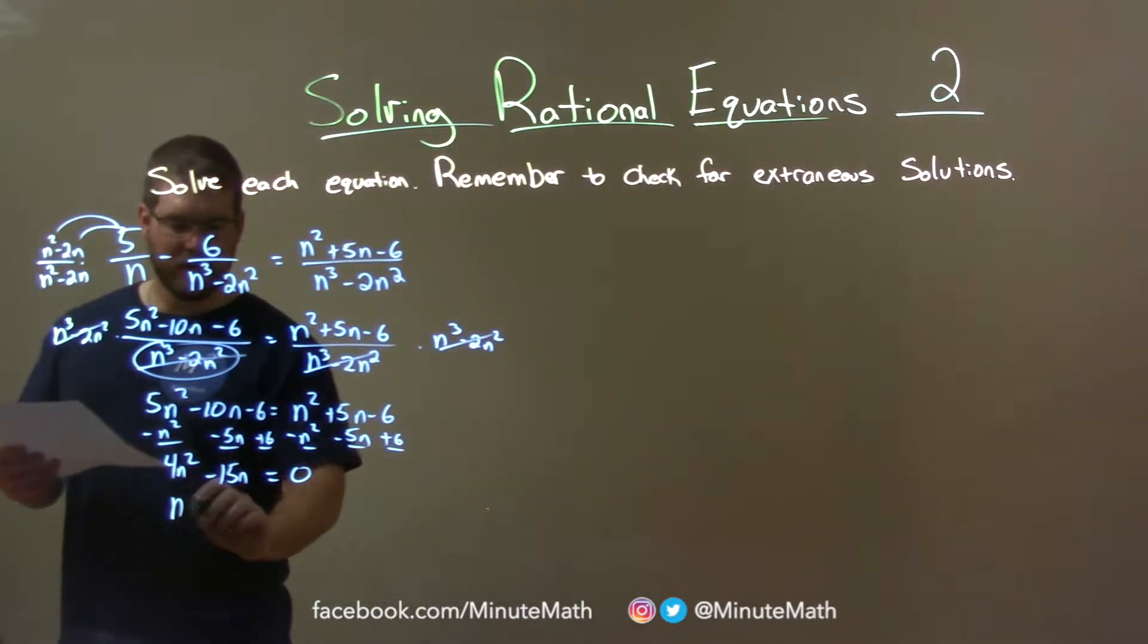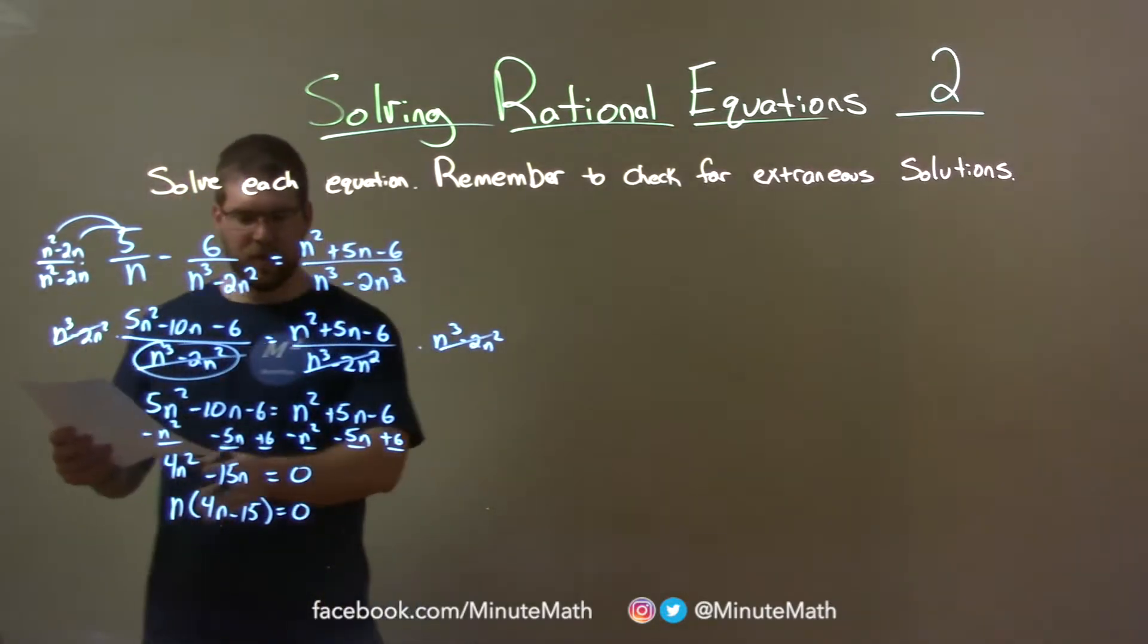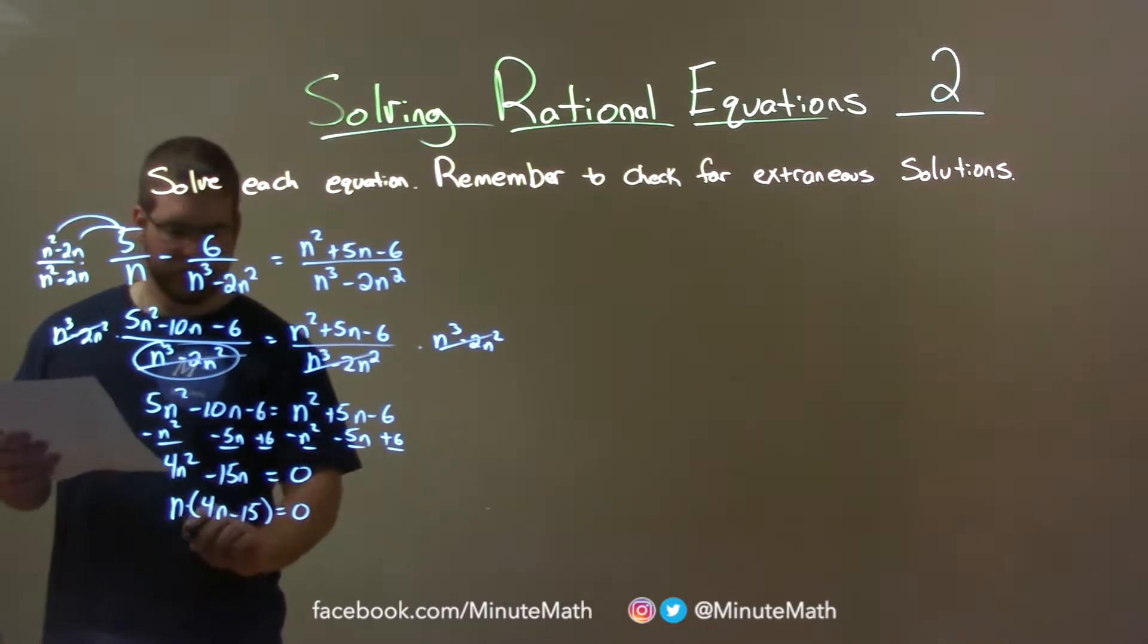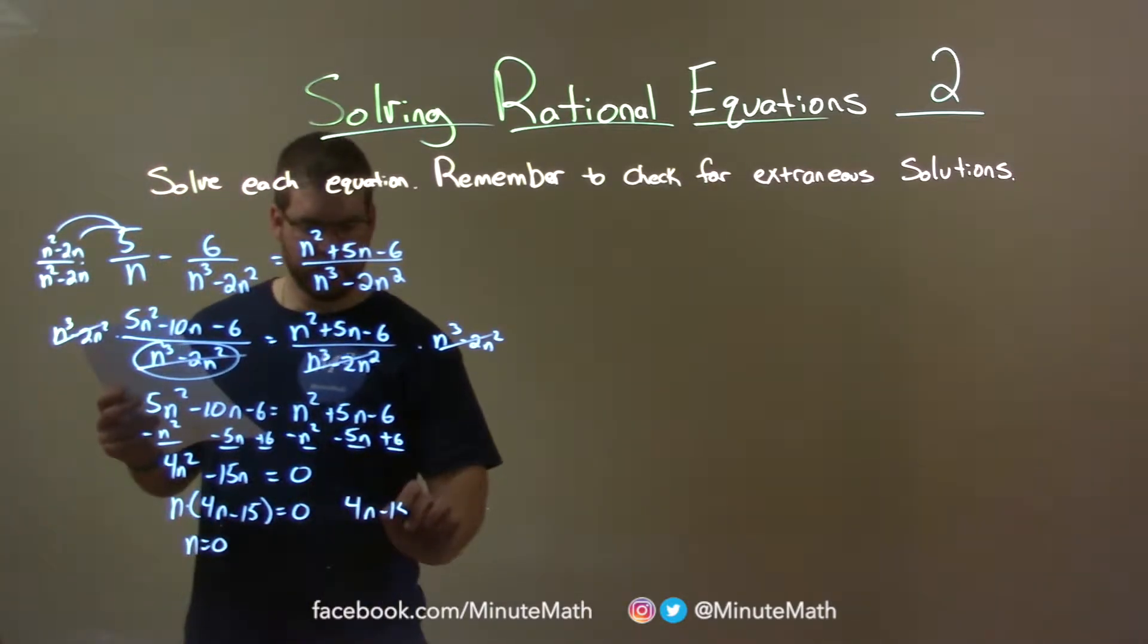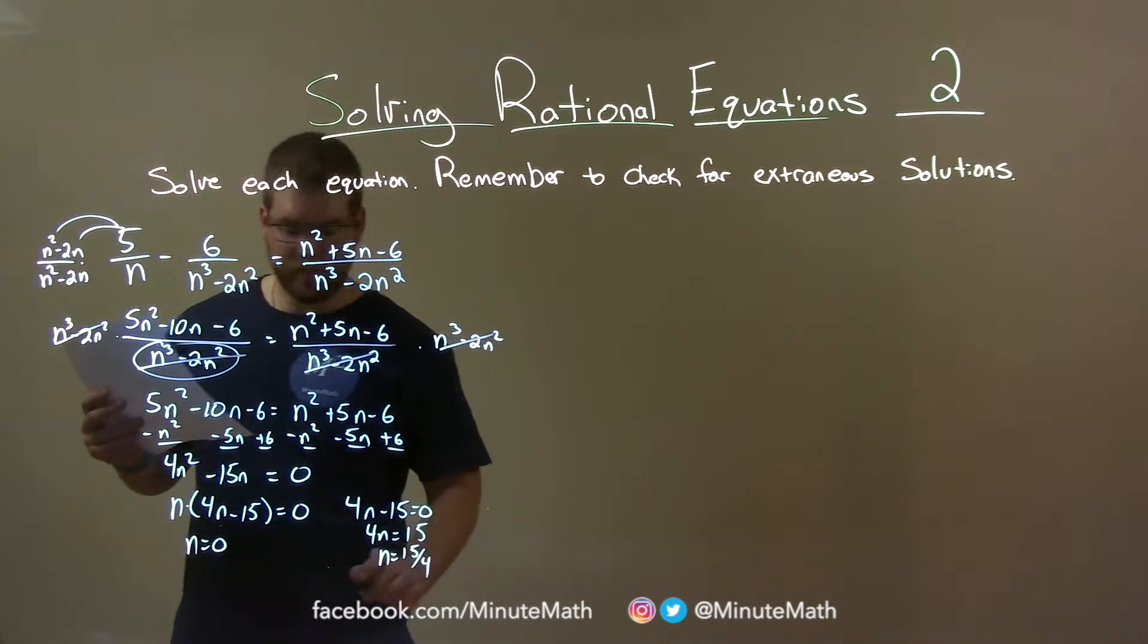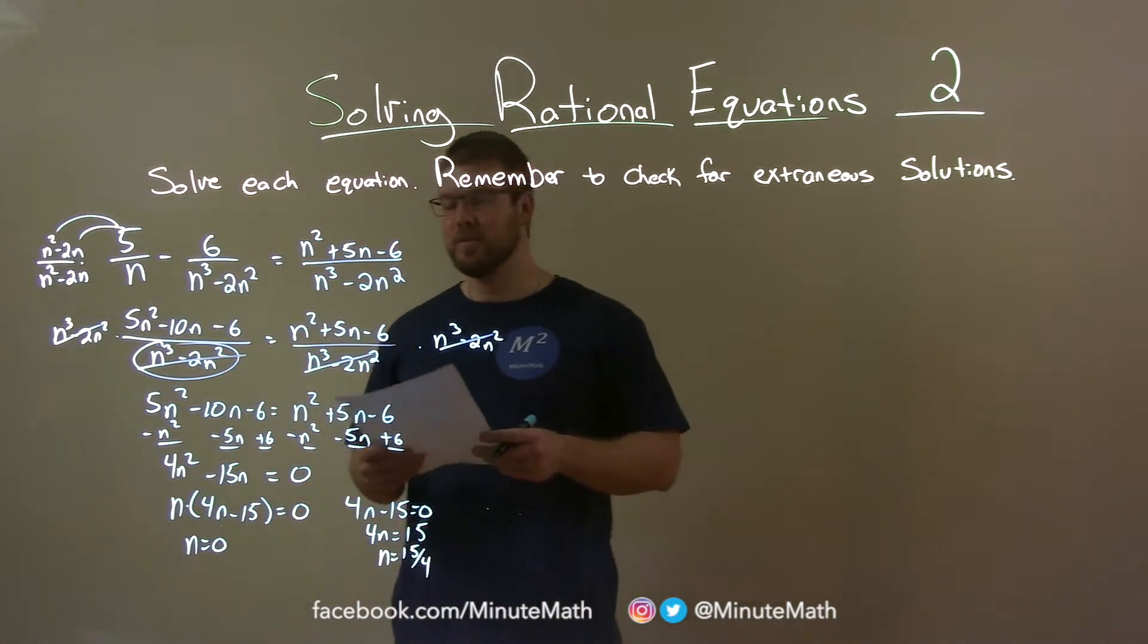Now this is all equal to 0. If I pull out an n, I have n times 4n minus 15 equals 0. So I'll set both parts equal to 0. n equals 0, and 4n minus 15 equals 0, so 4n equals 15, and n equals 15 over 4. Now we have to check both of these to see if there's any extraneous solutions.